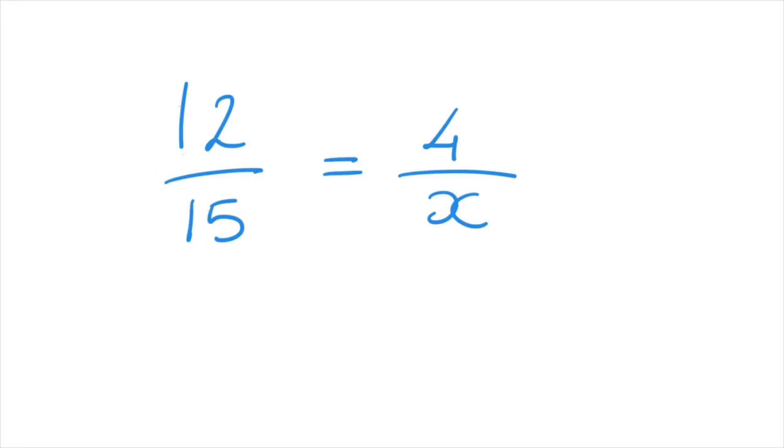And we compare its numerator, in this case 12, to the other numerator, which is 4. And we ask ourselves, what do we have to multiply or divide 12 by for it to equal to 4? And we notice that if we were to divide 12 by 3, then it would equal to 4.